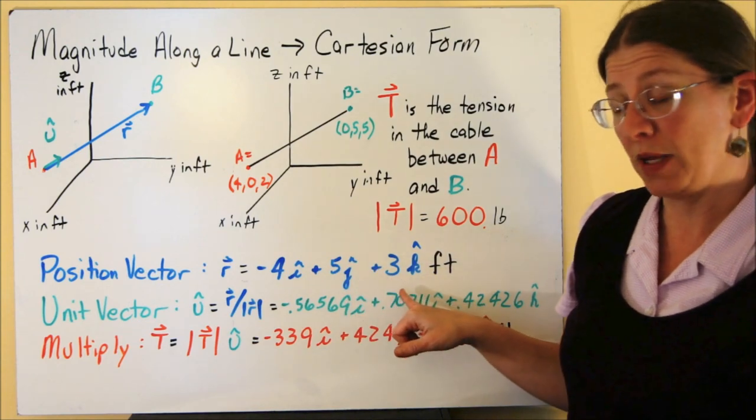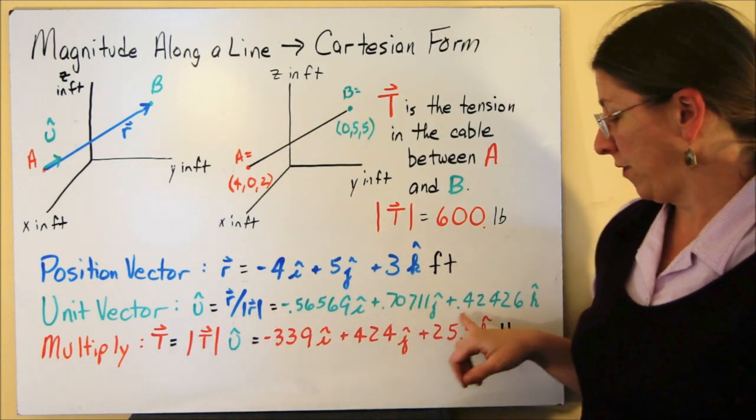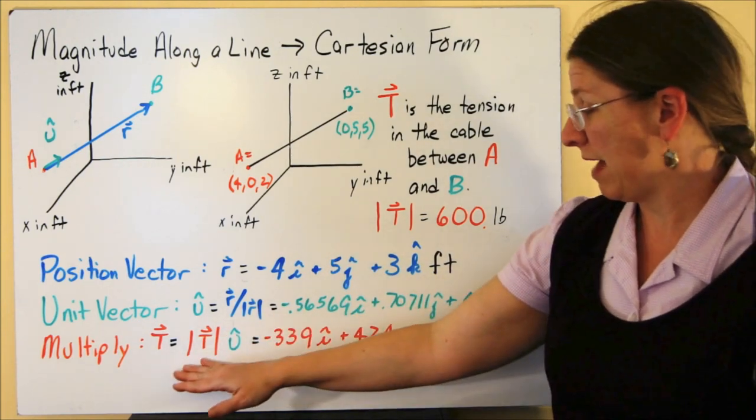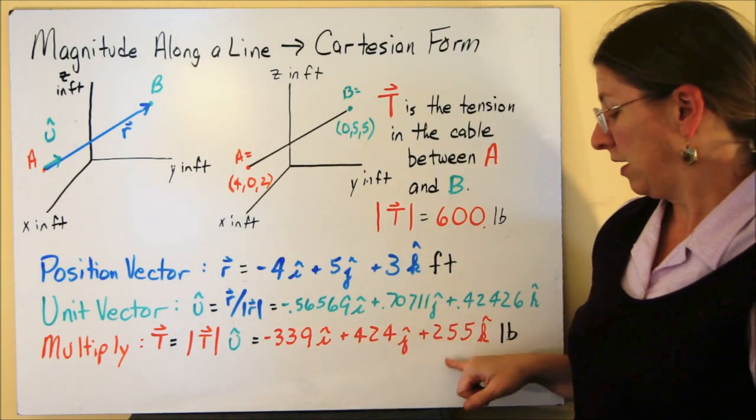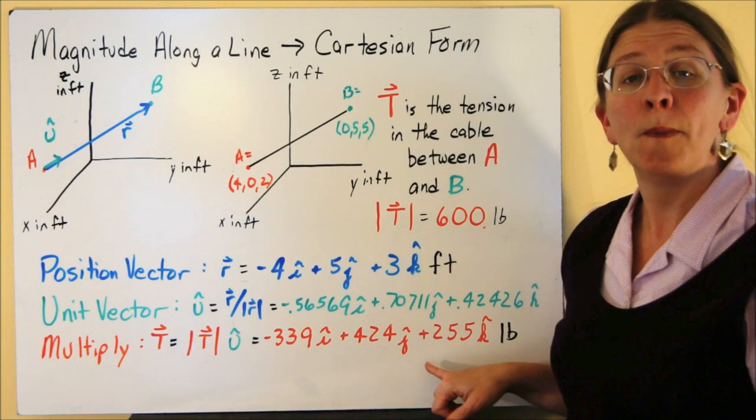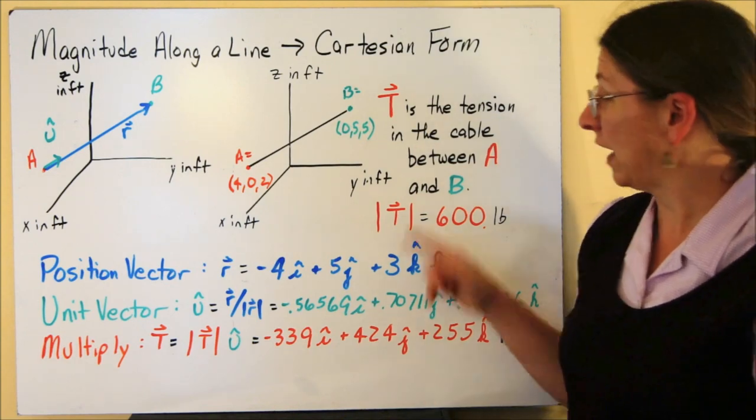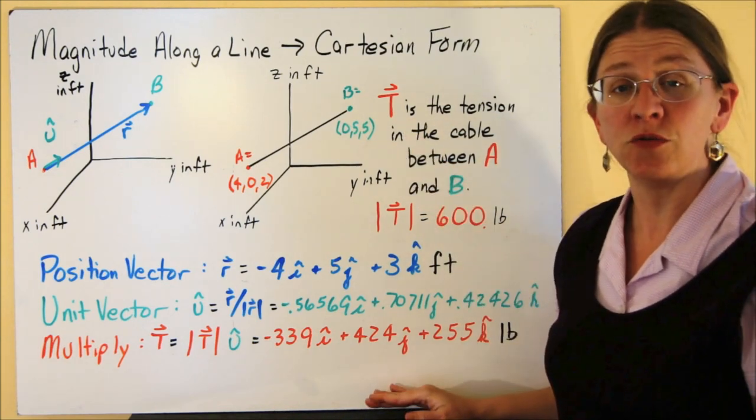Here's my position vector from A to B. My unit vector from A to B. Multiply that by 600. So 600 times my unit vector gives me this. That's my vector T in Cartesian form.